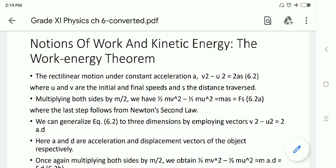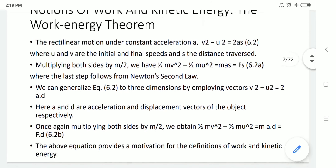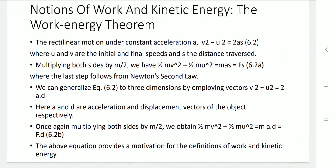This equation provides a motivation to define work and kinetic energy. The left side of the equation is a difference in quantity — half the mass times the square of the speed — from its initial to final value, which is known as kinetic energy, denoted K. The right side is the product of displacement and the component of force along the displacement, which is known as work. So we can define the equation as: Kf − Ki = W.